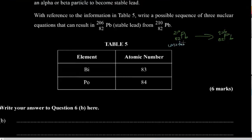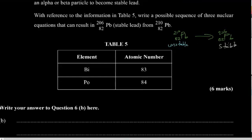That lead is an isotope — same atomic number, different mass number. So we have this unstable lead and we want it to form stable lead.